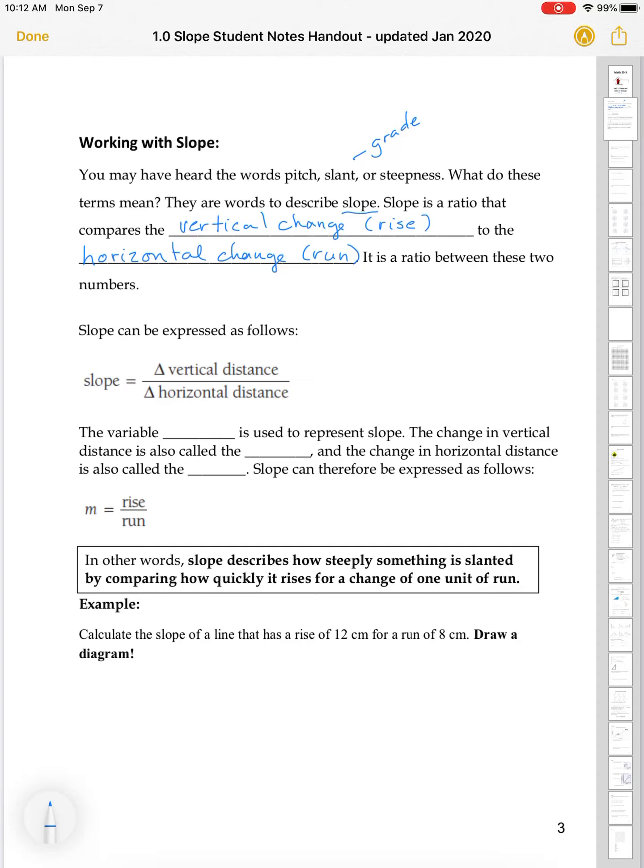I'll call that the run. It's a ratio between those two numbers. Now, slope can be expressed as follows. So, slope is equal to the change in vertical distance over the change in the horizontal distance. Or we call this the rise over the run. Now, we use a variable to describe slope. And the variable we use is m. We can also call this the rise over the run. And we can express it as slope is equal to rise over run. You'll notice I like to jump right to rise over run because that's what you might be actually more familiar with.